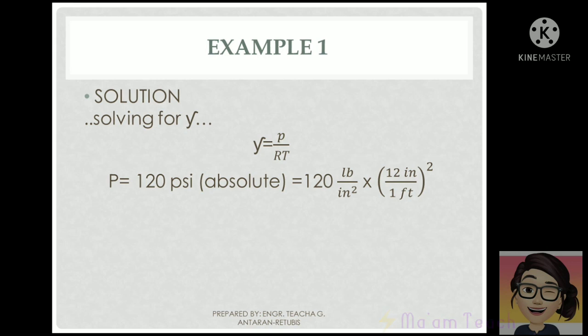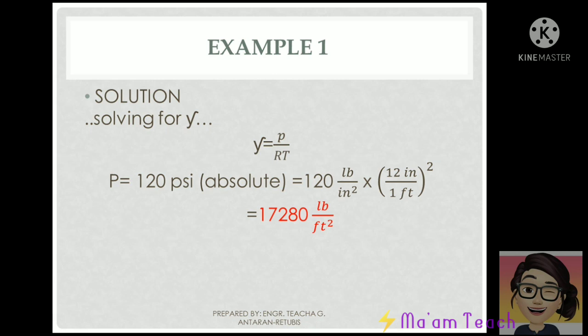You have to square that quantity to cancel out the square inches. Therefore, we have a value of 17,280 pounds per square foot. That's going to be our pressure.